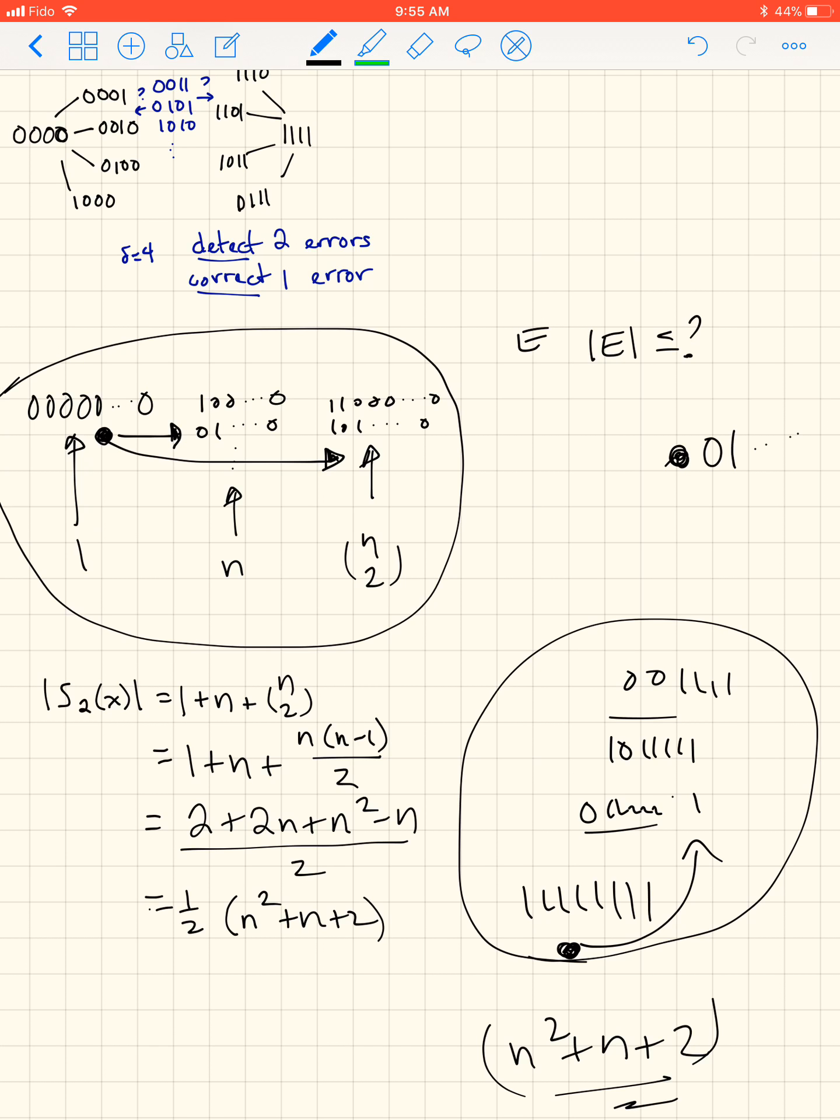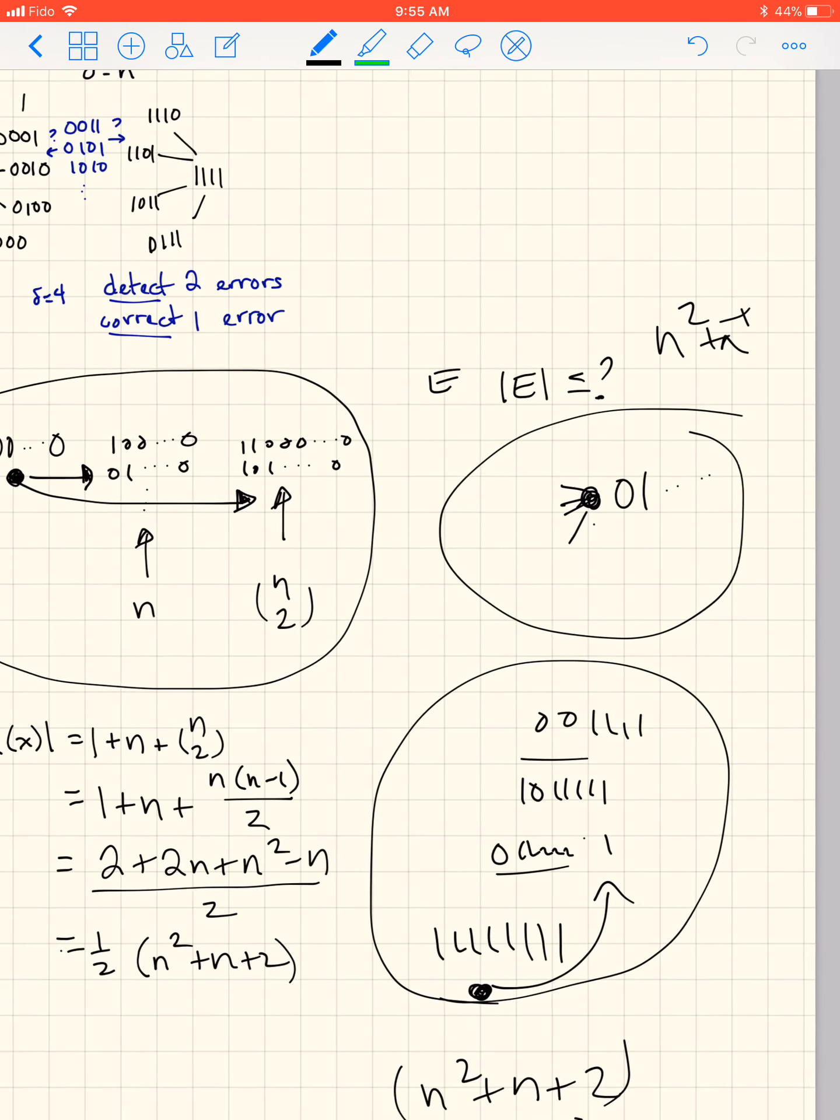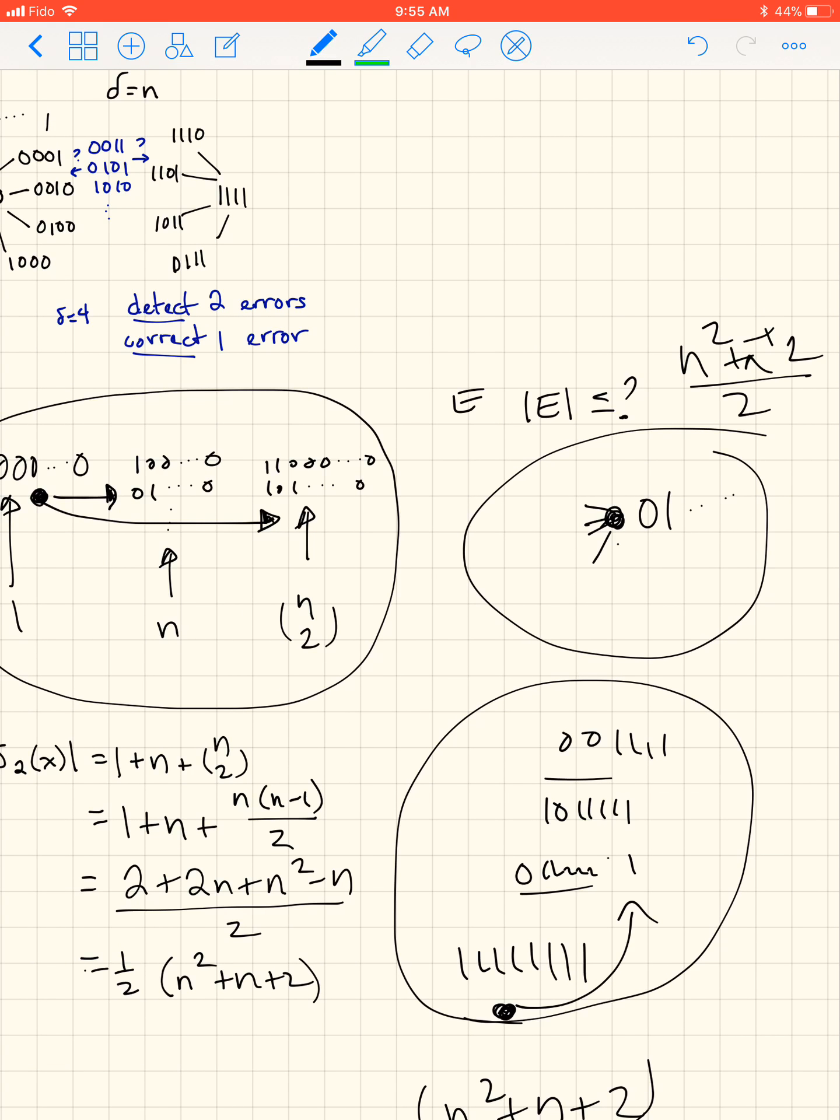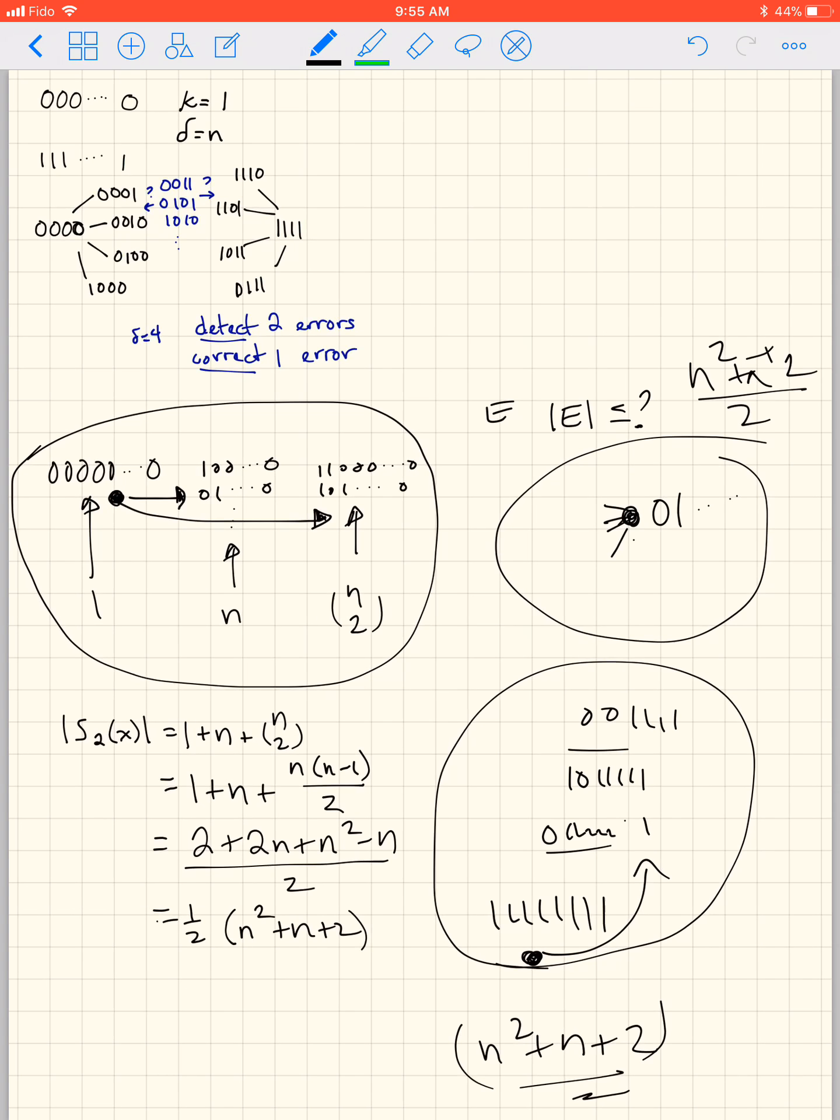So remember code words are the ones that are valid words that you can assume were received correctly, but just a general word is just any string of bits of the right value. And you have to decide if the word you received is a code word, or whether it gets corrected to one of your code words. So any word that's received, you figure out which one of these spheres it's in, and that tells you which code word you're going to correct it to.